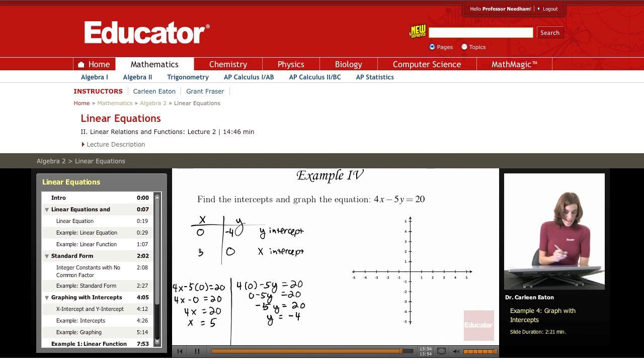Now that I have my x and y intercepts, I actually have two points on the line. My first point is 0, negative 4, the y intercept. My second point is at 5, 0, and that's the x intercept.